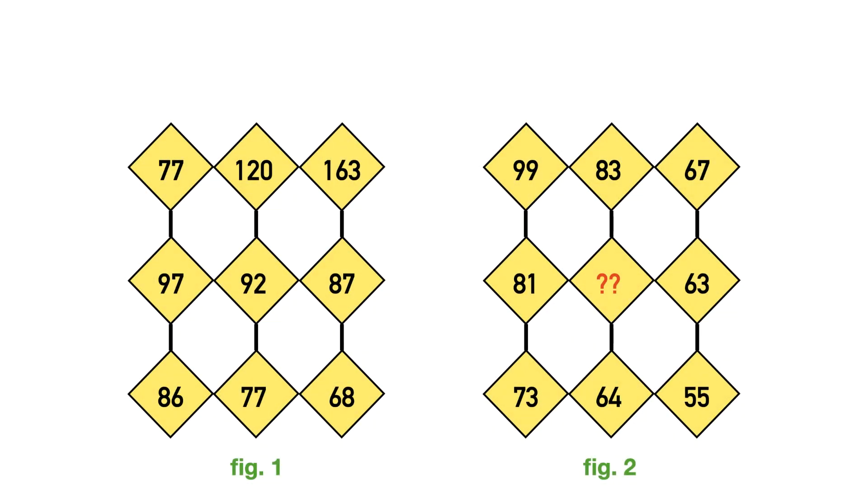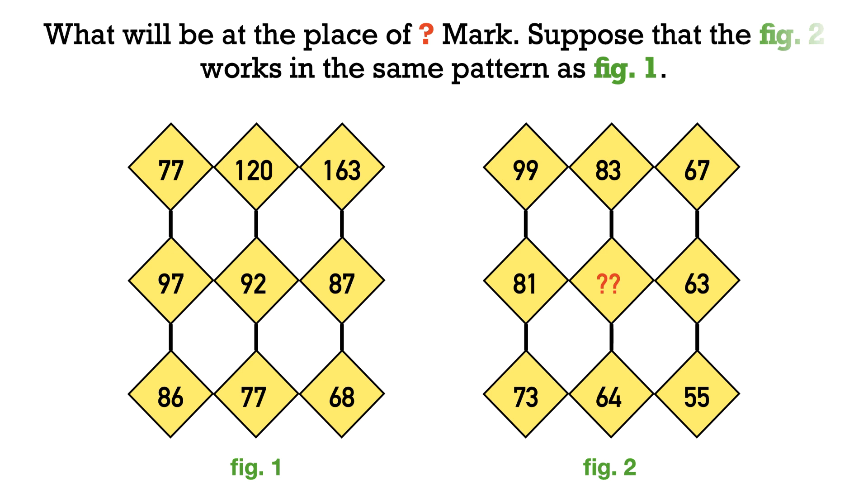Hello logical people, this is Venktesh. Here there are two figures. In each figure, numbers are represented in a certain pattern. We are supposed to find the number at the place of question mark in figure 2.